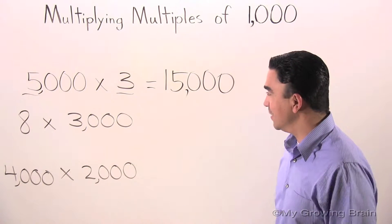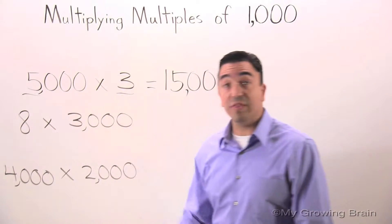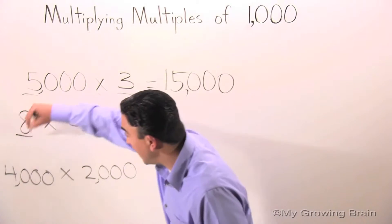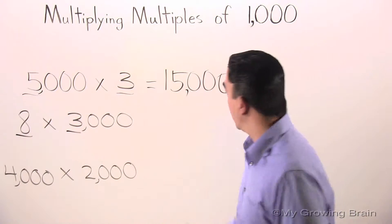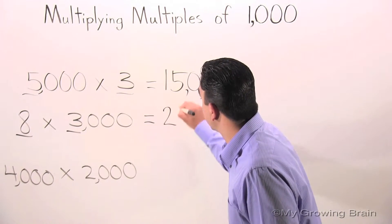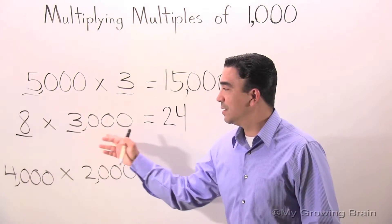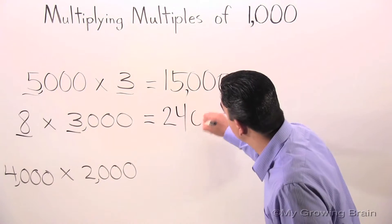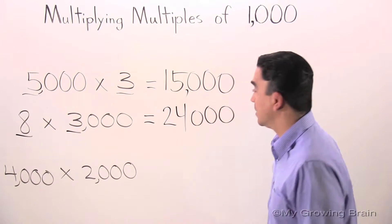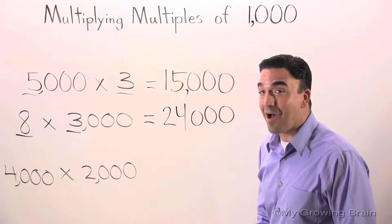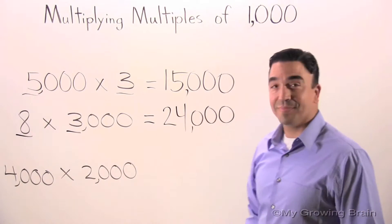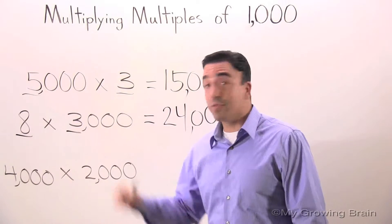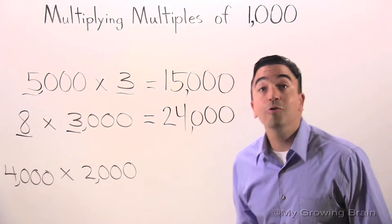Let's go to the next one. Eight times three thousand. Eight times three is twenty-four. Three zeros after the twenty-four. Don't forget the comma. Eight times three thousand is twenty-four thousand.